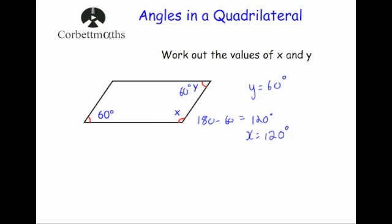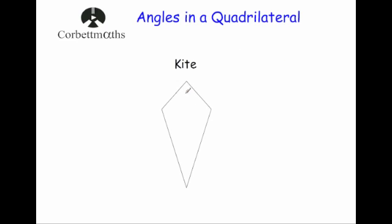Next, a kite. On a kite positioned like this, the angle on the left and the angle on the right are equal to each other, and all four angles still add together to give you 360 degrees. Let's have a look at a question now.